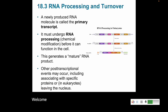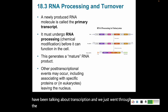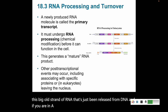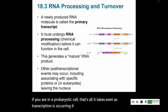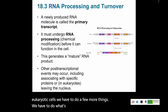Welcome back to cell biology class. We have been talking about transcription and we just went through the process of how we are making our RNA transcripts. We have this big strand of RNA that's just been released from DNA. In a prokaryotic cell, that's all it takes — even as transcription is occurring, it can start translation. But in our eukaryotic cells we have to do a few more things. We have to do what's called RNA processing.